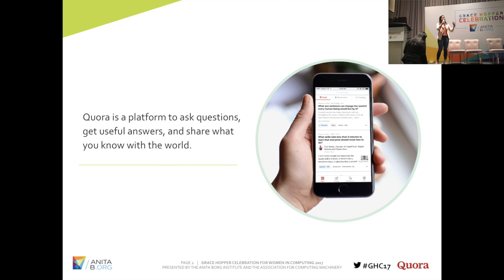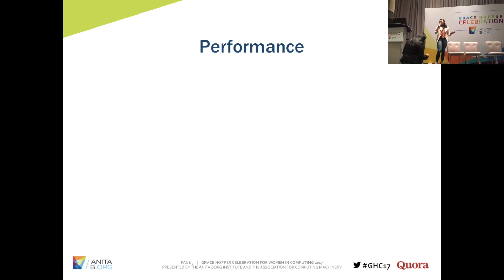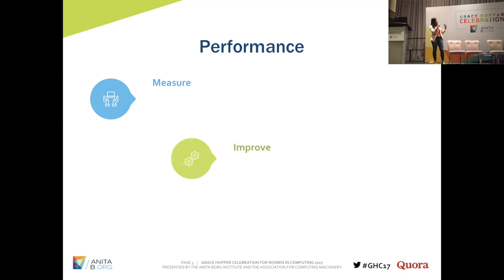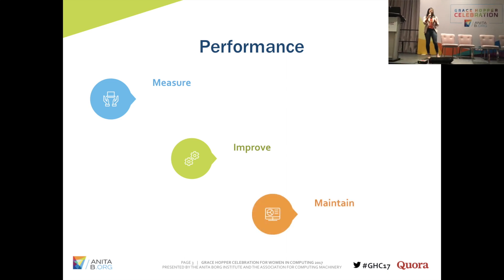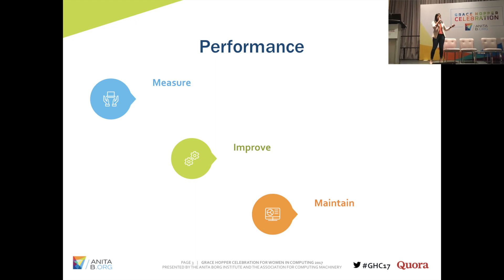In order to be the best platform in the world at doing that, we want to make sure that Quora is as fast as possible. Today I'm going to talk about three different categories of work: starting from measuring — how do we quantify speed — what are some of the actual improvements we've done to speed up the site, and how do we maintain performance so it doesn't get slowed down after we make those improvements.